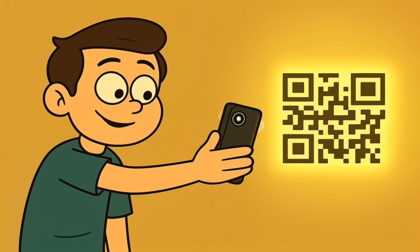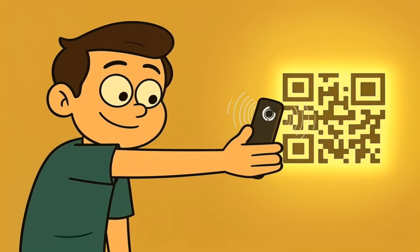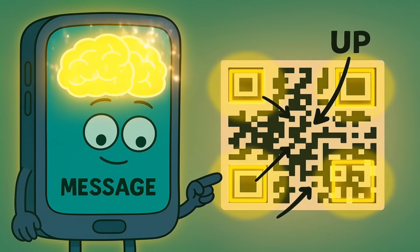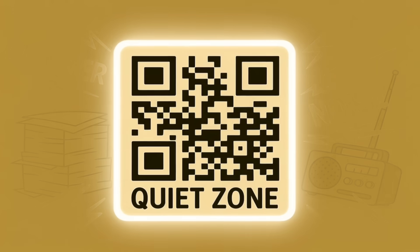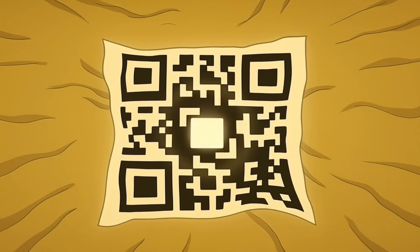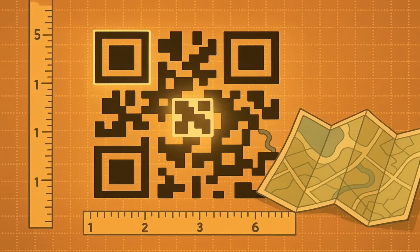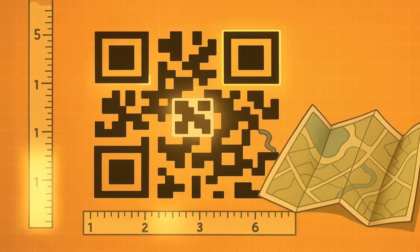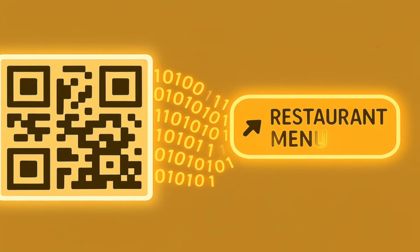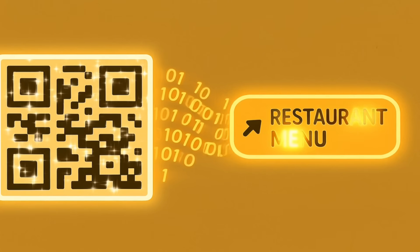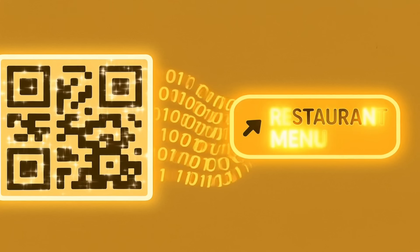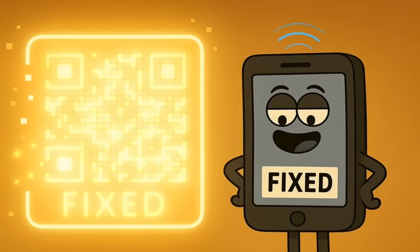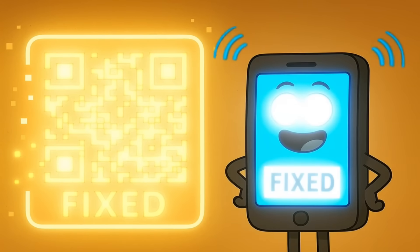Let's recap the whole journey. Your phone's camera opens, you point it at the squiggly square, and in a blink, the phone's brain finds the three big anchor squares in the corners to know where the message is and which way is up. It uses the quiet zone to make sure it's not reading anything else on the page, and it uses the little straightening square to digitally flatten the image if it's on a weird surface. It uses the dotted gridlines to learn the size of each tiny square and create a perfect map. Then it reads every single black and white square as a 1 or a 0, translating that long computer code into the website for the restaurant. And if part of the code is messed up, it uses the built-in backup information to fix the message and show it to you anyway.